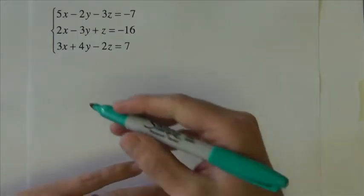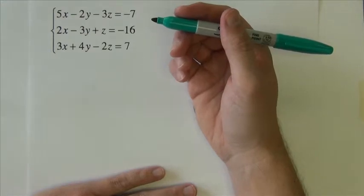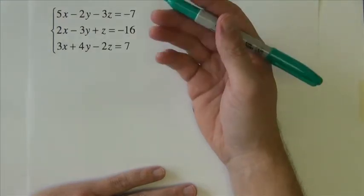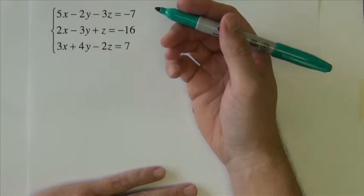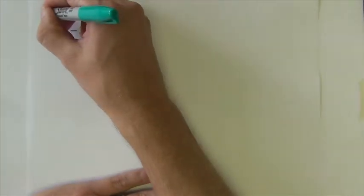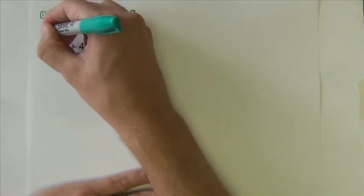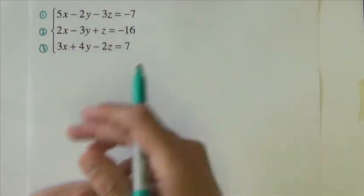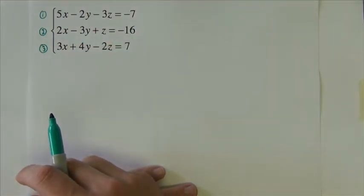The first thing I like to do, just to help organize my work - you can do this if you like but you don't need to. It also helps me as your instructor to grade and check your work when you possibly make errors. I'm going to number my equations so I know which ones I'm working with all the time. So equation one, two, and three.